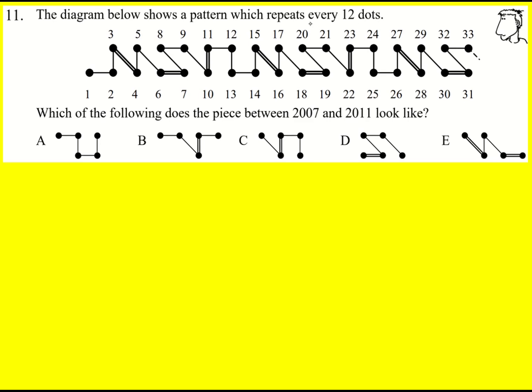Let me first identify the repeating pattern. So the first 12 dots, and I'm going to include the line that then joins to the 13th dot, is going to be this here.